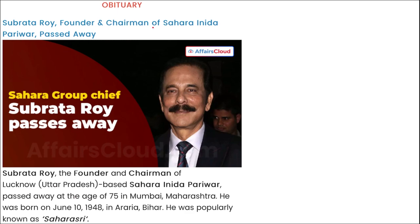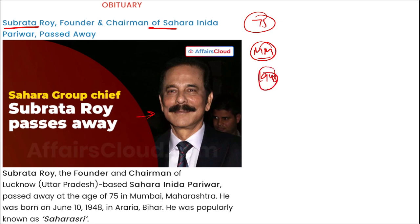In Obituary: the founder and chairman of Sahara Group, Subrata Roy, recently passed away at the age of 75 years. He was born in Mumbai, Maharashtra in 1948. Sahara was once a very large company, but due to various circumstances, the company did not perform well and money of various investors was lost.